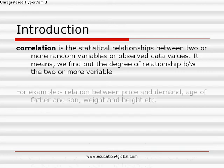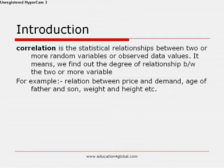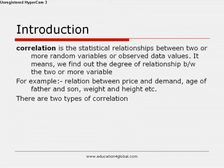For example, we can find out the relation between price and demand, age of father and age of son, the weight and height of a person, and also the relation between rainfall and growth of harvest. So we can find many types of relation between two or more variables.